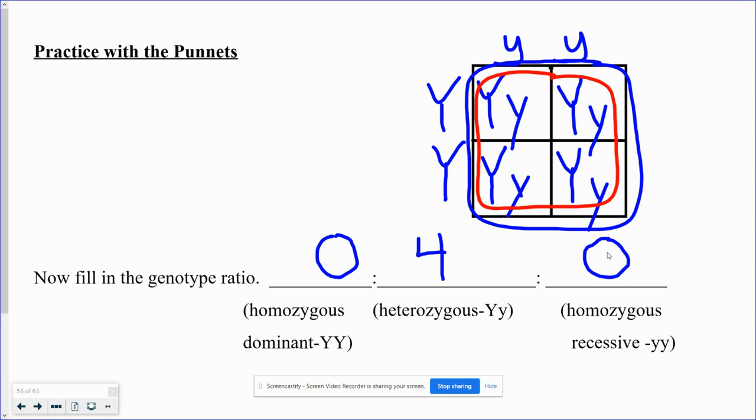Again, these numbers should always equal four. So you might have something that comes out, I don't know, 1:2:1 or 4:0:0, but either way they should always add up to four. All right, we're going to get into some practice problems next.